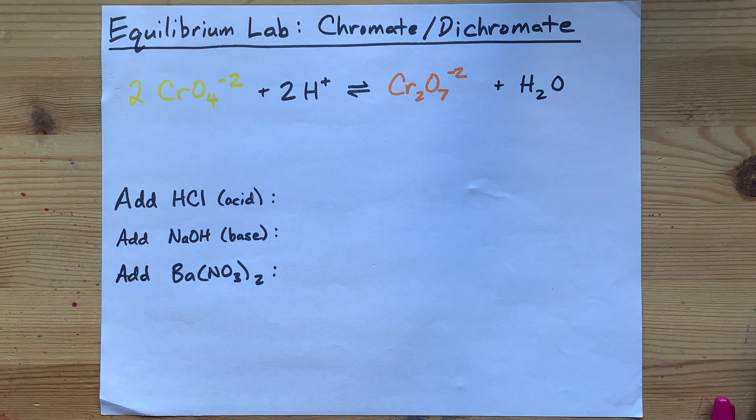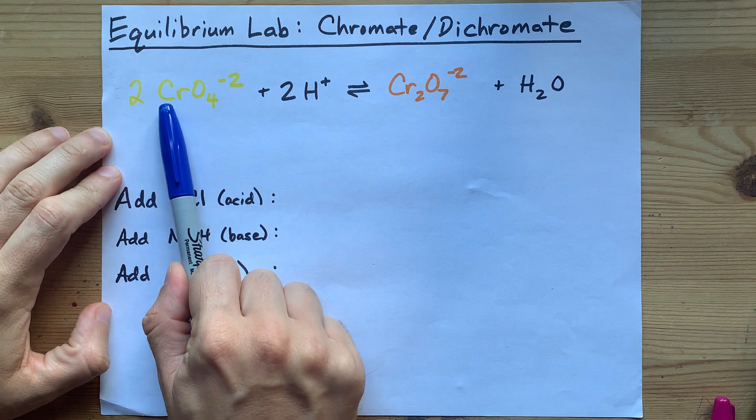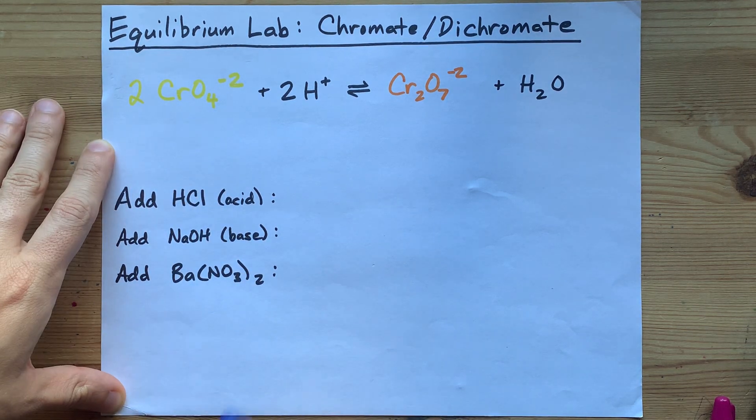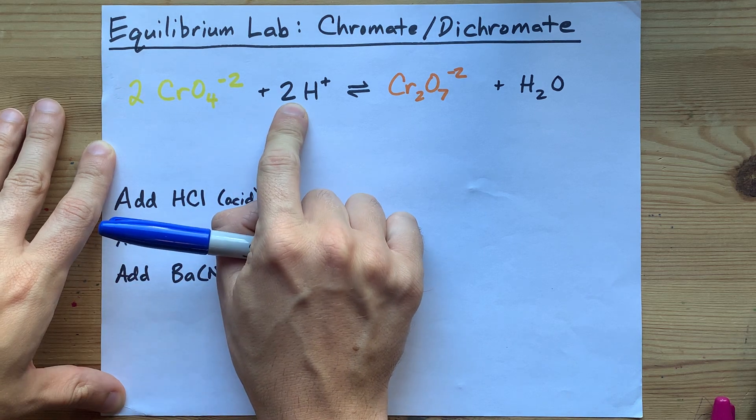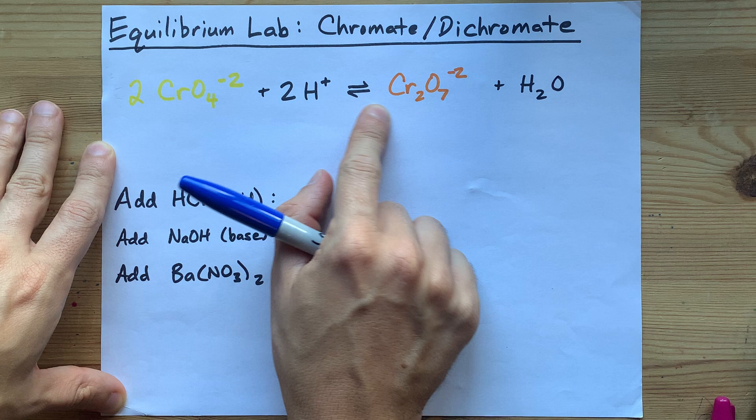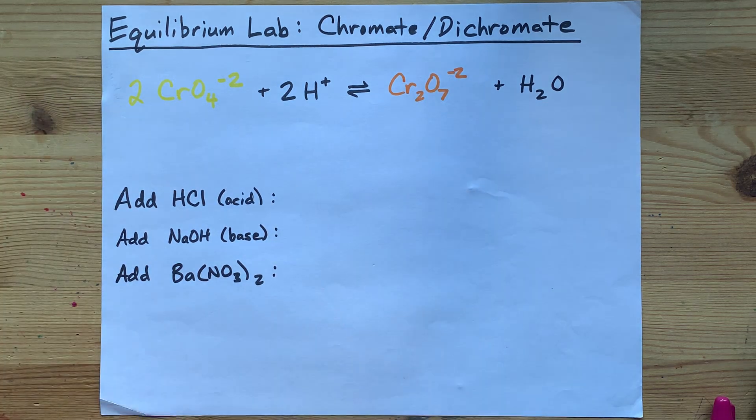Here's the facts about the chromate equilibrium lab, where you start with yellow colored chromate ions in an aqueous solution. And as you add acid or protons or H+ ions, the equilibrium shifts to the right, making dichromate, which is more of an orange color.